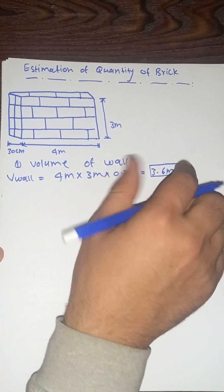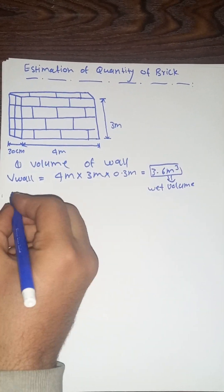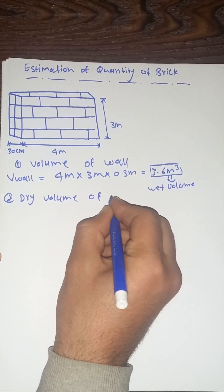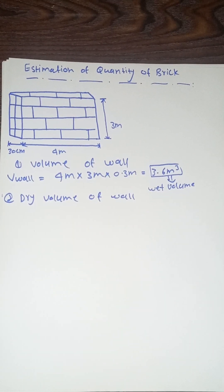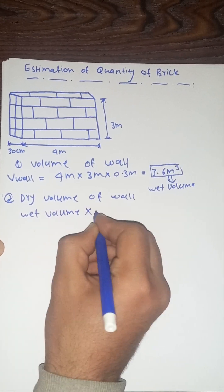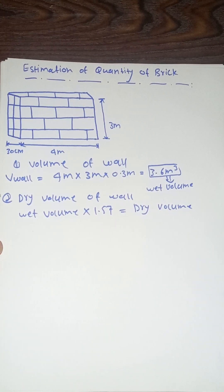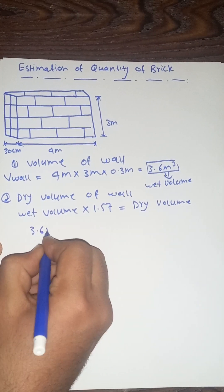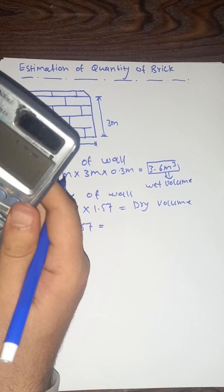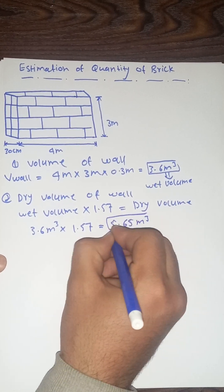So this is actually the wet volume of the wall. The second step is to find the dry volume of the wall. For finding the dry volume, we multiply the wet volume by 1.57. So 3.6 m³ × 1.57 equals 5.65 cubic meters. This is our dry volume.